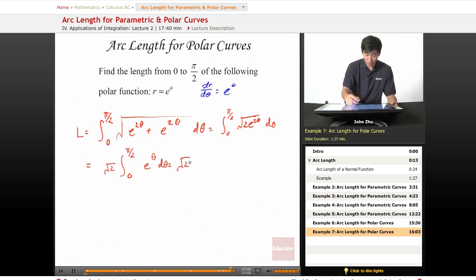So, we end up with square root of 2 times e to the pi over 2, minus e to the 0, which is 1.